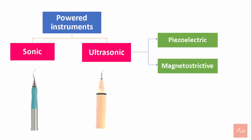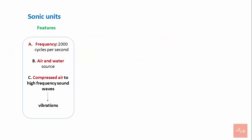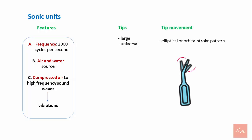Powered instruments can be sonic or ultrasonic. Sonic units work at a frequency of 2,000 cycles per second and use compressed air from the dental unit and water as a source. The compressed air is converted into high-frequency sound waves that create vibrations. The tips used are large and universal in design, with an elliptical or orbital stroke pattern, allowing the instrument to be adapted to all tooth surfaces.